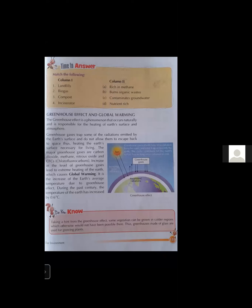The major greenhouse gases are carbon dioxide, methane, nitrous oxide, and CFC — chlorofluorocarbons. CFC is the short form of chlorofluorocarbons. Increasing the level of greenhouse gases leads to extreme heating of the Earth, and this phenomenon is known as global warming. Global warming is the increase in the Earth's average temperature due to the greenhouse effect.